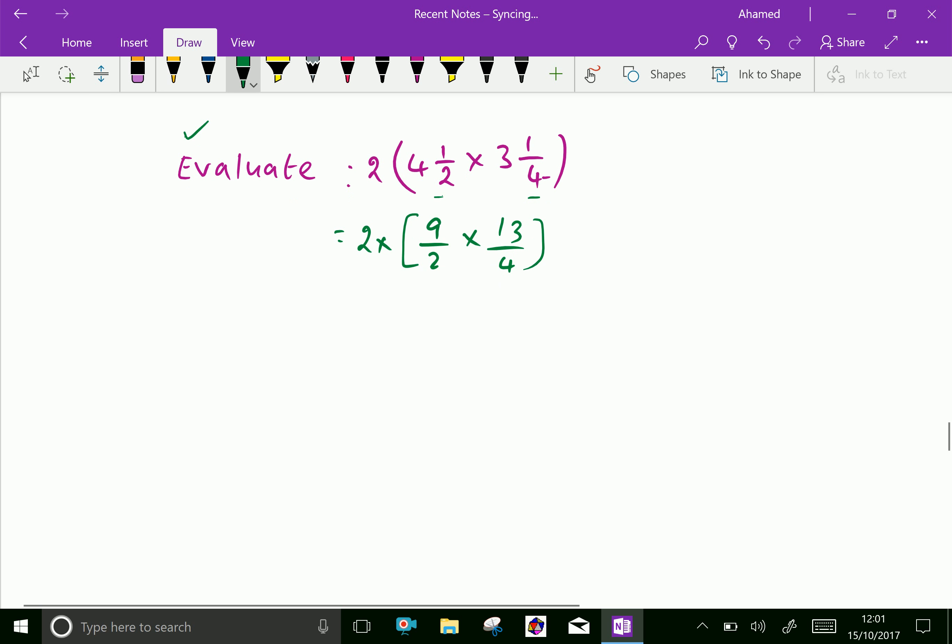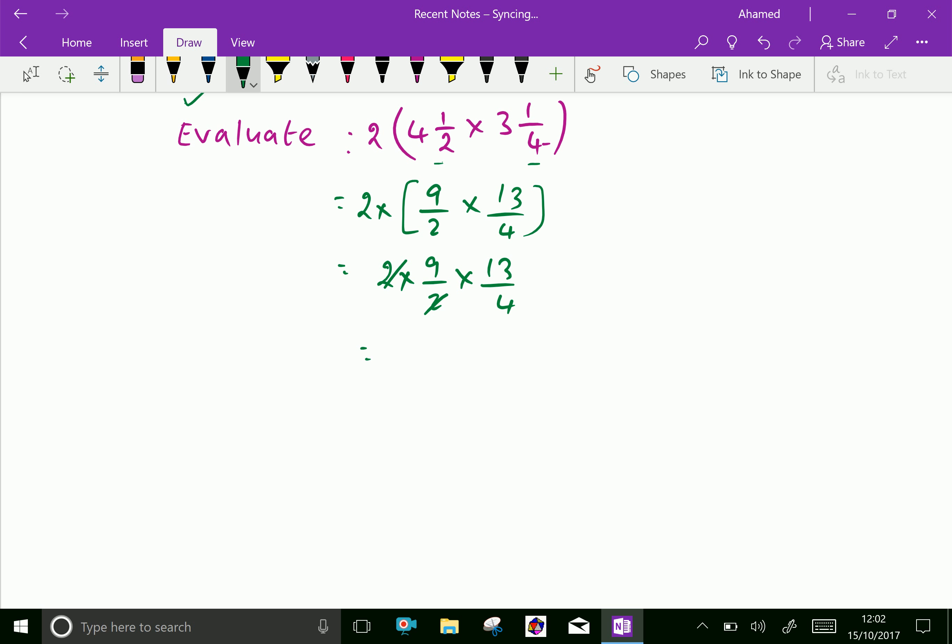Now remove the bracket as multiplication. 9 over 2 into 13 over 4, 2 and 2 cut. So we get 4 as a denominator and 9 into 13 is 117.